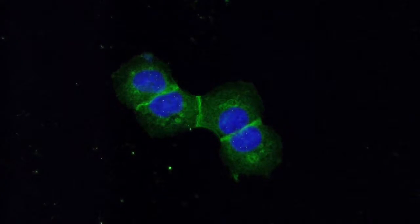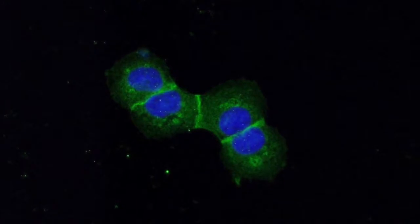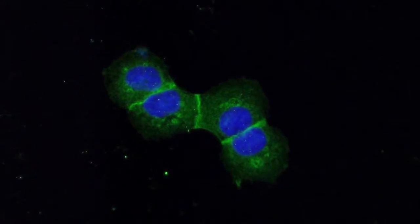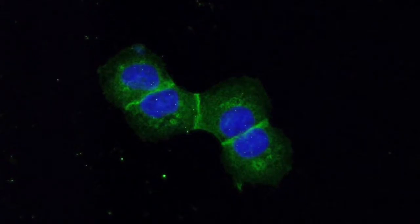Expression of cadherins begins in the two-cell stage of embryonic development, where it plays a key role in the formation of tissues during gastrulation, neurulation, and organogenesis.